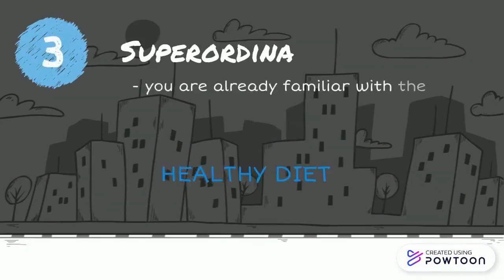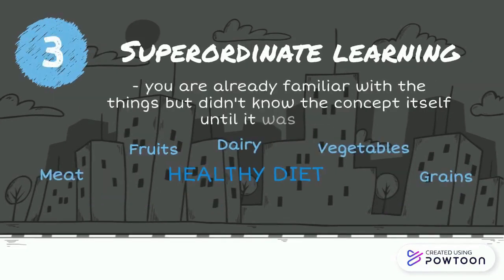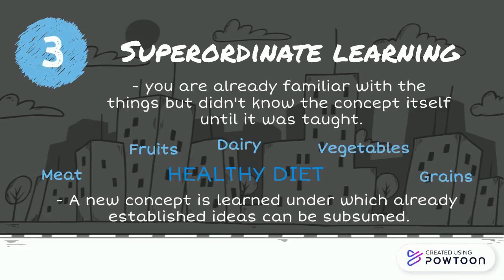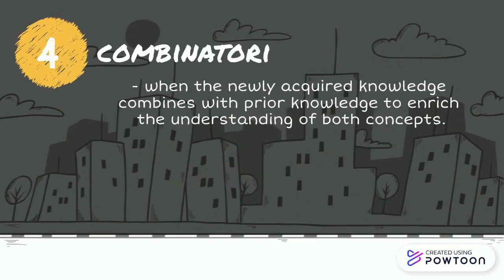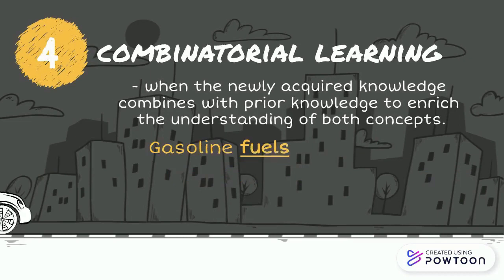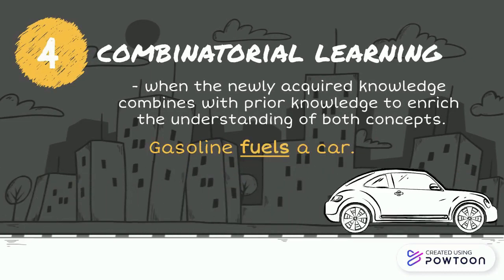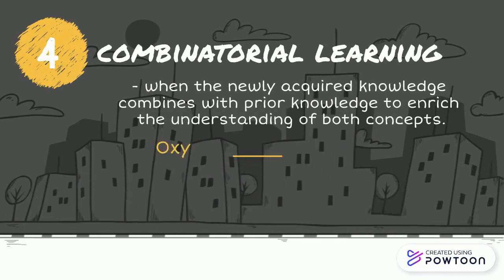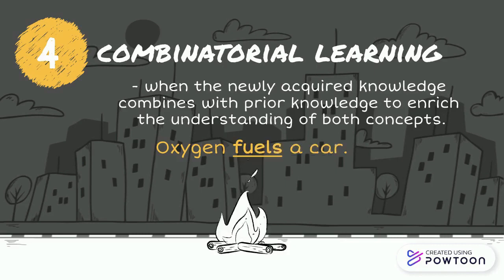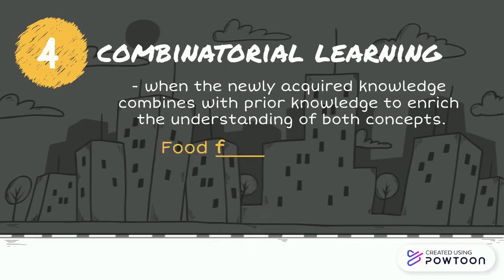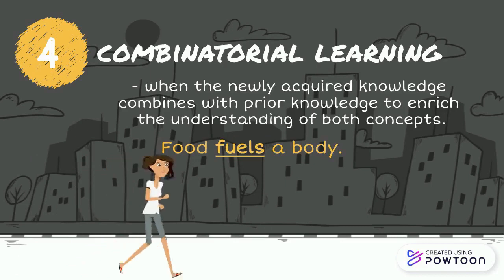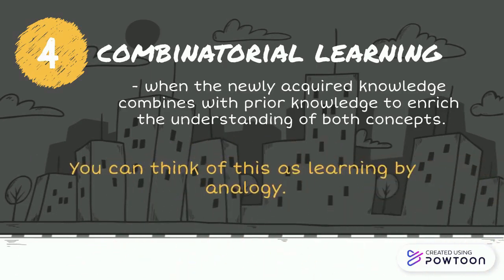Third, superordinate learning — it means you are already familiar with the thing, but didn't know the concept itself until it was taught. A new concept is learned under which already established ideas can be subsumed. Fourth, combinatorial learning — it is when the newly acquired knowledge combines with prior knowledge to enrich the understanding of both concepts. You can think of this as learning by analogy.